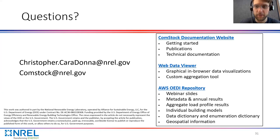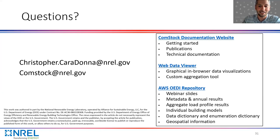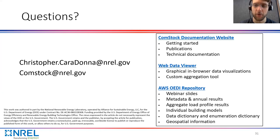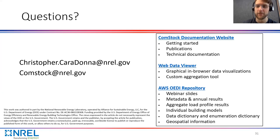First question: what is the minimum speed of the variable speed compressor? 30%. And that depends on whether outdoor air permits the speeds to get that low. Next question: usually we see crankcase heaters, especially for cold climate air source heat pumps — do the performance maps for COP include this? No, the crankcase heaters are modeled separately in EnergyPlus. If that's not the case in your software, you would want to integrate that into the performance curves.